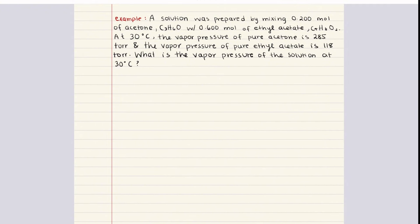This example says a solution was prepared by mixing 0.200 moles of acetone with 0.600 moles of ethyl acetate. At 30 degrees Celsius, the vapor pressure of pure ethyl acetate is 118 torr. What is the vapor pressure of the solution at 30 degrees Celsius? We're also given the molecular formulas for acetone and ethyl acetate. Now acetone and ethyl acetate are both volatile, and the reason we know this is that they both have a vapor pressure in their pure states.